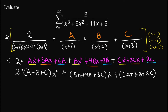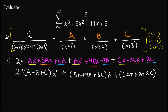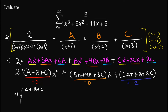We now compare the left side with the right side. For this equality to be true, the coefficient of x squared must equal 0 since there is no x squared on the left, the coefficient of x must also equal 0, and the constant must equal 2. This gives us a system of equations: A plus B plus C equals 0, 5A plus 4B plus 3C equals 0, and 6A plus 3B plus 2C equals 2.